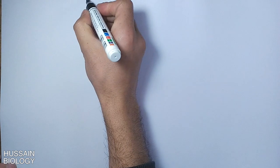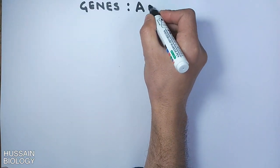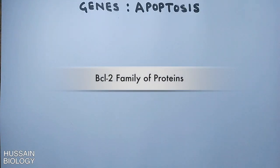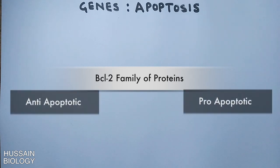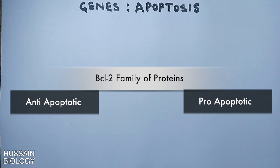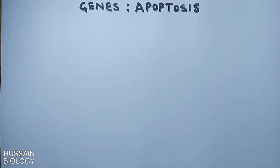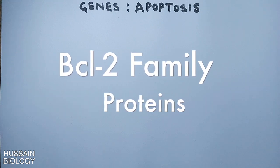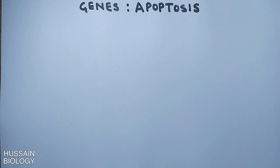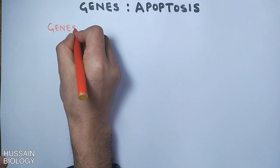In this video on molecular biology, we will be discussing genes and their proteins that regulate apoptosis. We include two types of genes: pro-apoptotic genes, which promote apoptosis, and anti-apoptotic genes, which inhibit apoptosis. This video will be more focused towards the BCL-2 family of proteins, and we will organize the genes according to their role and function in apoptosis.